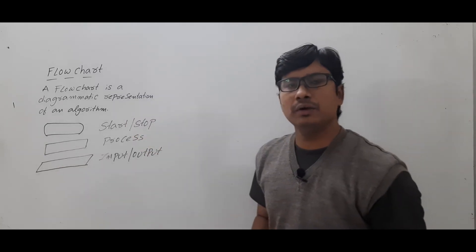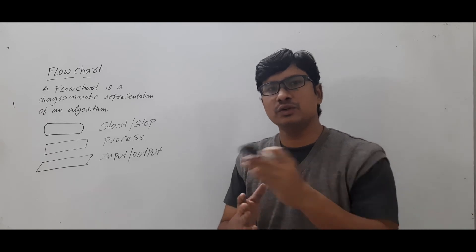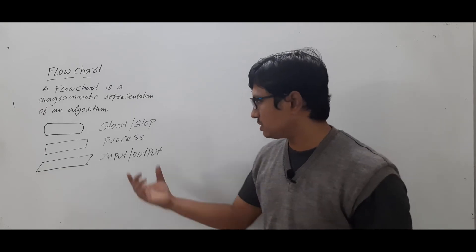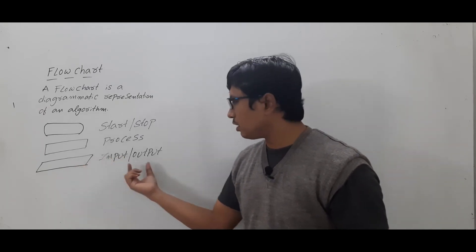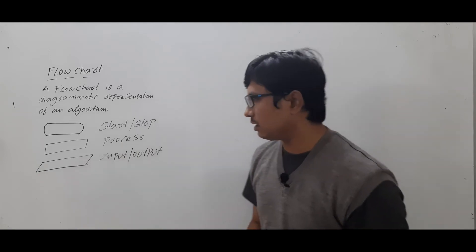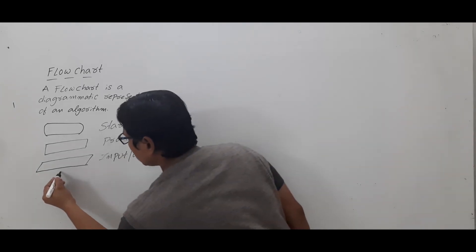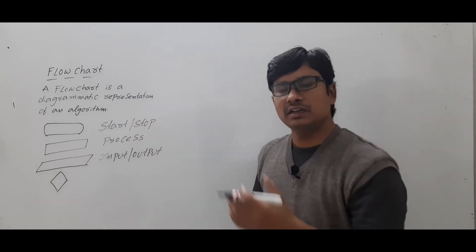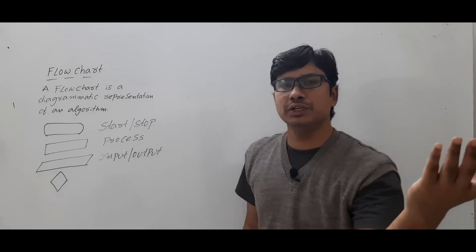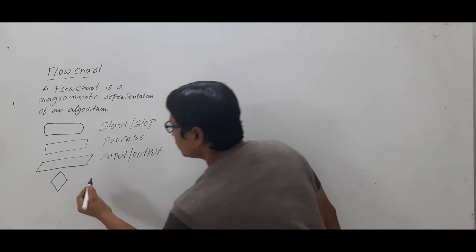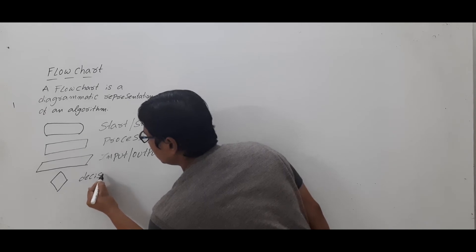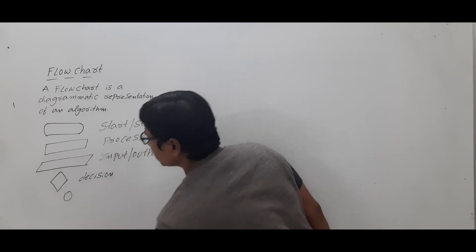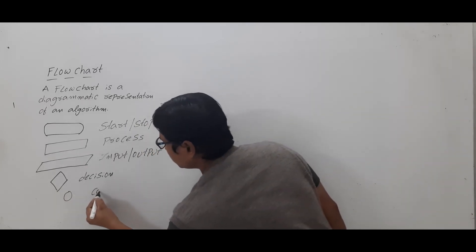For input and output you use the symbol called the parallelogram. Every algorithm takes zero or more inputs and produces at least one output, and in the flowchart you represent both input and output using the parallelogram. For decisions — like if some condition is true you do one thing, else you do something else — you represent those using the diamond symbol.